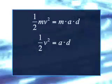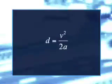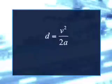Solve for d, the distance traveled as the car comes to a stop. This is the stopping distance: d equals v squared over 2a.